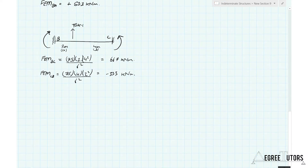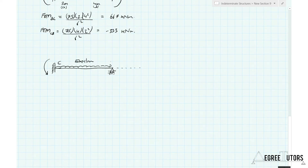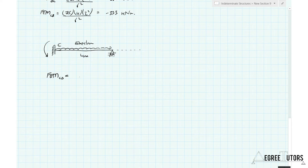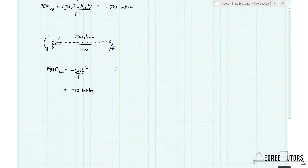The fixed end moment for CD is going to be based on a propped cantilever model, and that is always the case when we have a cantilever to the right at D. The fixed end moment for CD is minus WL² over 8 for the propped cantilever, which will be minus 10 kNm. The fixed end moment for the far side DC is 0 because it's a pin.